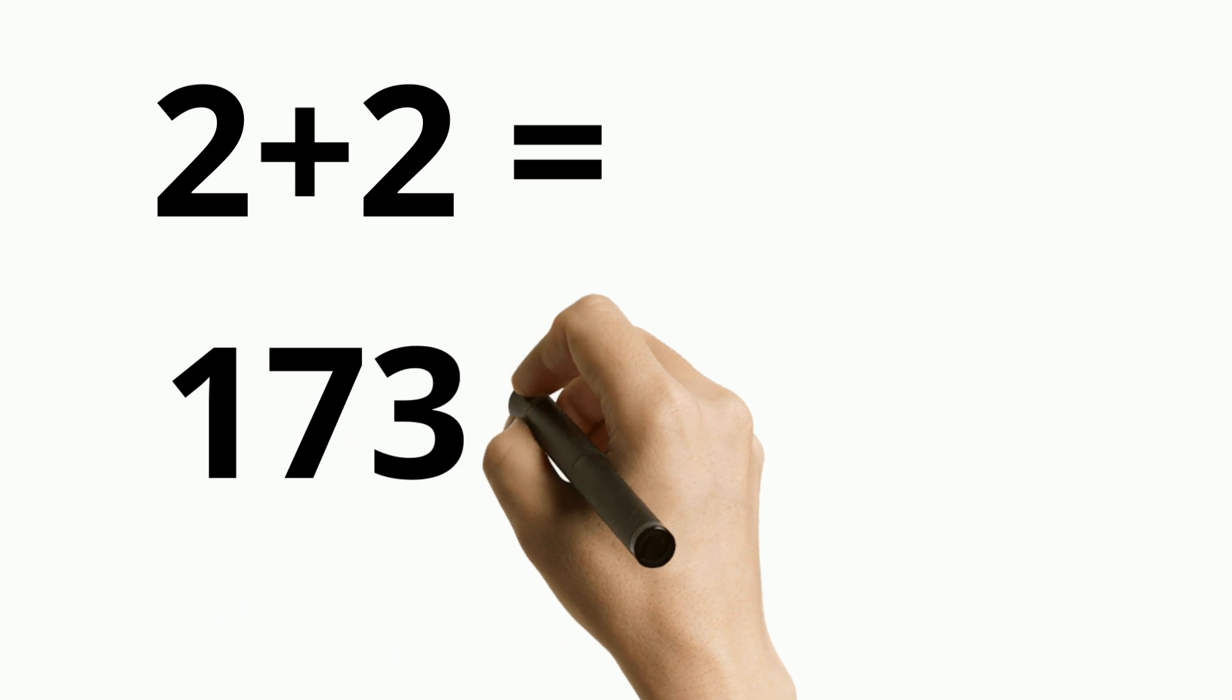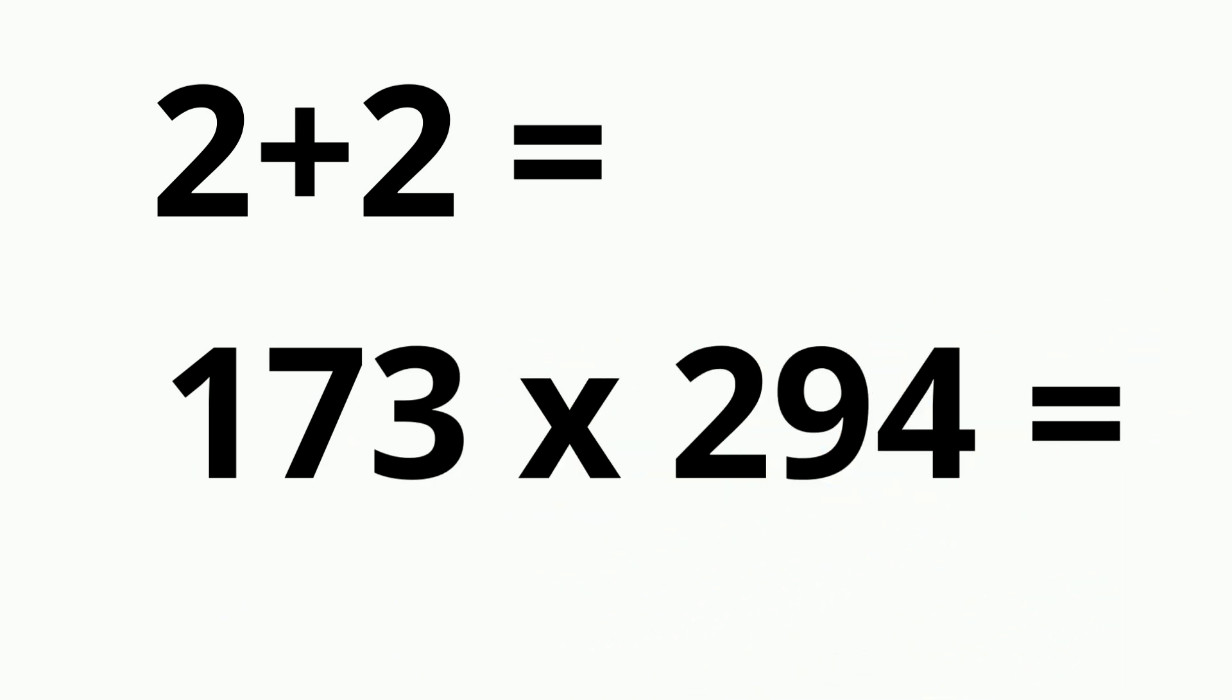173 times 294 would require slow thinking, which is slow, logical, and calculated.